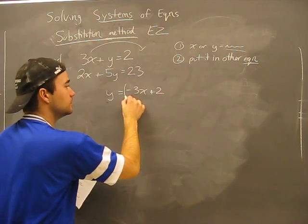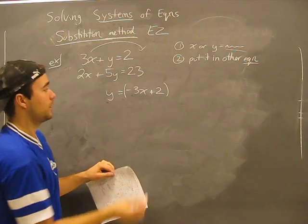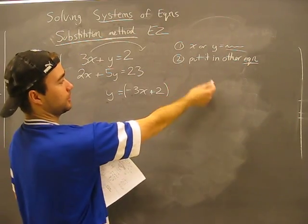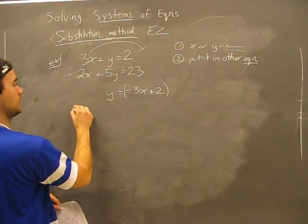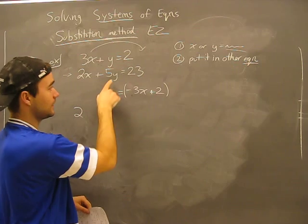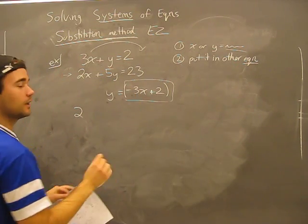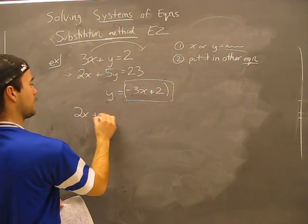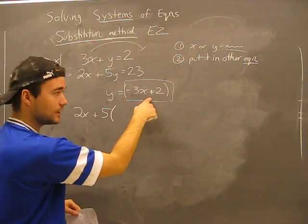So this is what y equals, this entire thing. We're already done step one. That was grade 7 stuff. Next one: put it into the other equation. Well, here's the other equation. So let's look at this. Instead of y, instead of the letter y here, we're gonna put in this thing, whatever ugly mess it turns to be, and it could get ugly. Instead of y, I'm putting in what y equals.